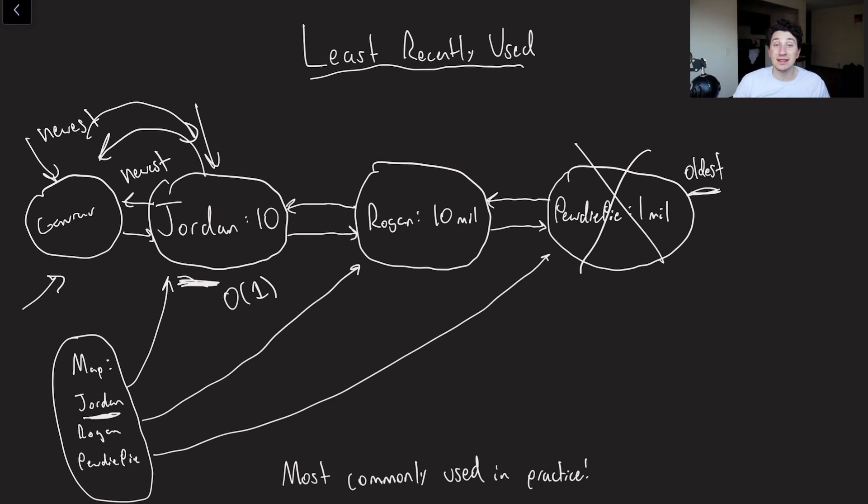And so LRU is relatively easy to implement, which is why it's commonly used in practice. It also just makes a lot of sense. If I access a value in the cache a minute ago, it doesn't matter if it's been in there for a week, I still want it because I'm still accessing it. So I shouldn't get rid of it.